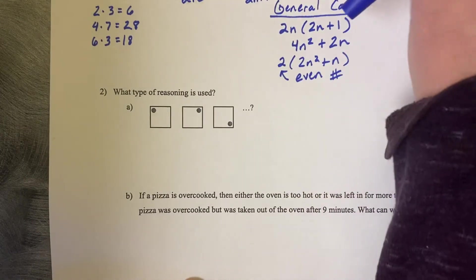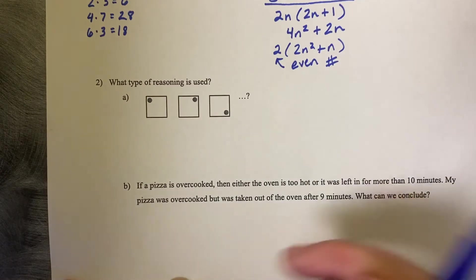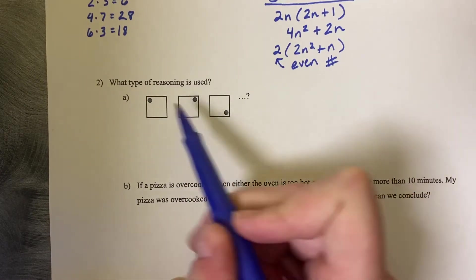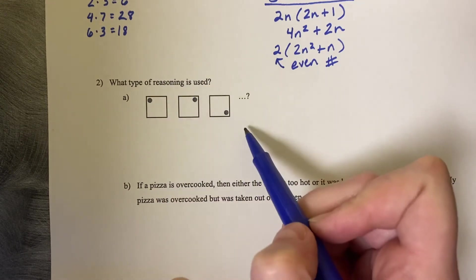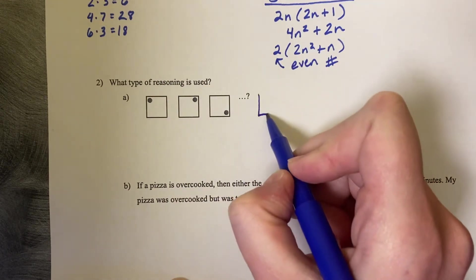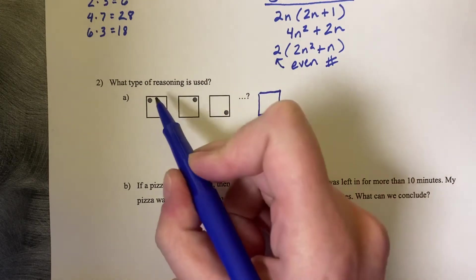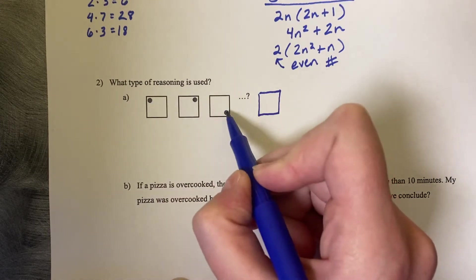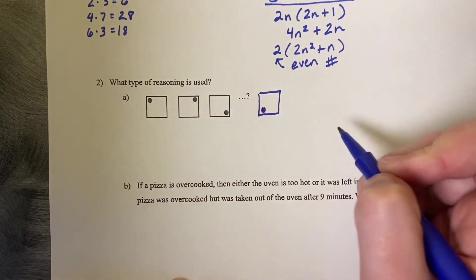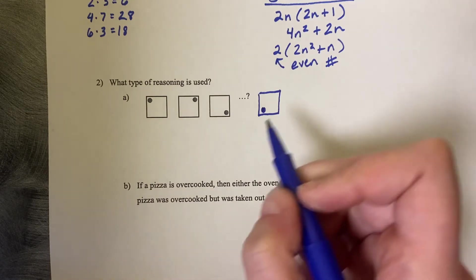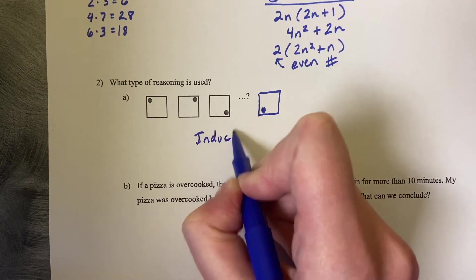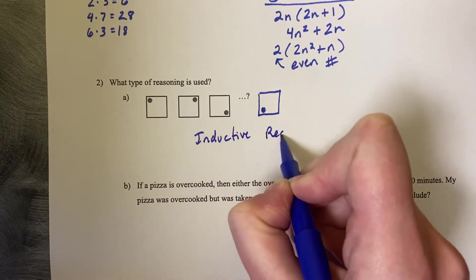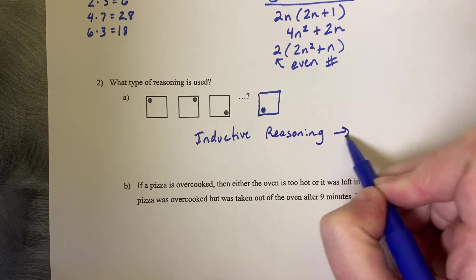Alright, let's try some more examples. What type of reasoning is used? So we've got 3 boxes, dots are in the corner, so what would be the next picture? So the next picture is going to be another box. I can see that it's moving clockwise. So I know that my next one is going to be in the bottom left corner. And how did I do this? This was inductive reasoning. It's a pattern.